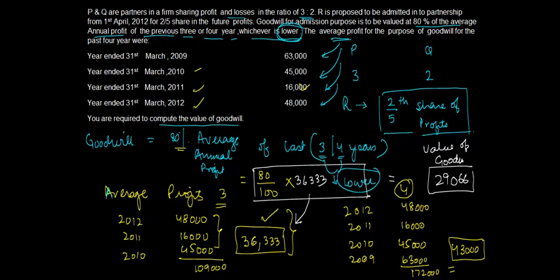Goodwill in this case, right, the only catch was that you have to calculate it based on the last three or four years, whichever is lower. So you calculate the average profit for three years, for four years, and the lower of that you take and find out 80 percent of that.